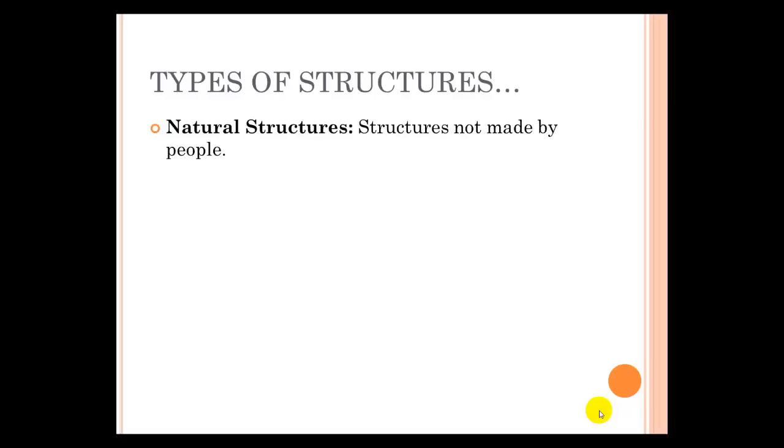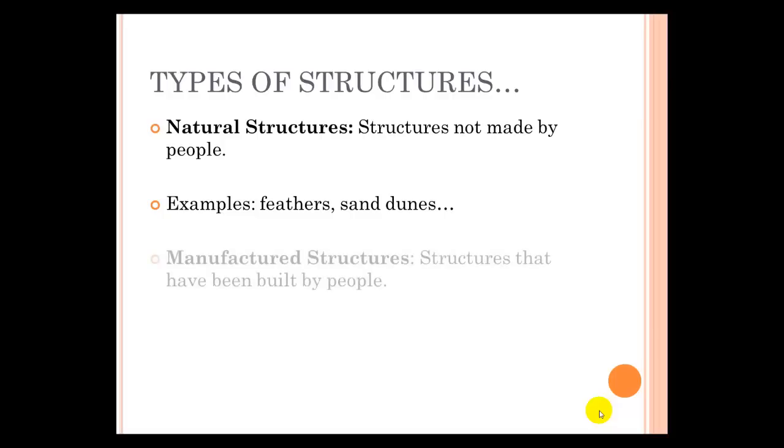There are a couple of different kinds of structures. The first are natural structures, or structures not made by people. An example of natural structures are things like feathers, or sand dunes, or snowbanks, or mountains.